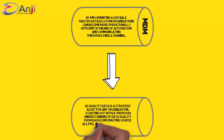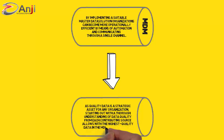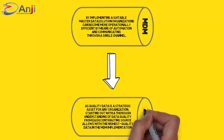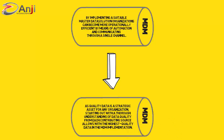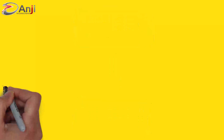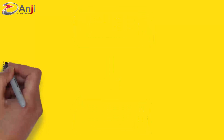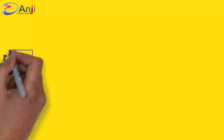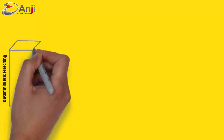One of the data quality issues is data duplication. To identify and remove these duplicates, deterministic and probabilistic approaches are used. Deterministic matching protocol — it all starts with the data source.